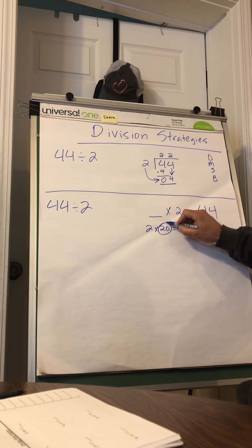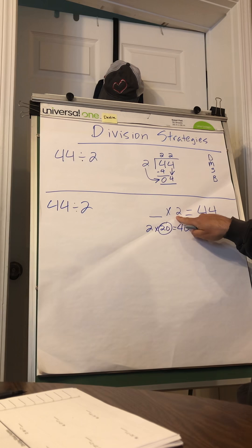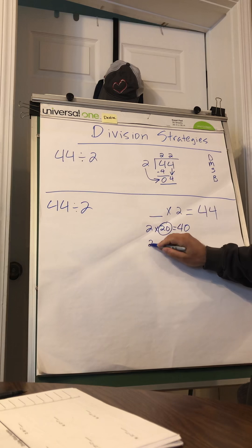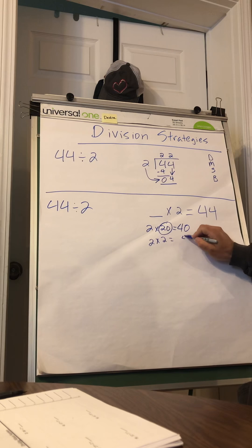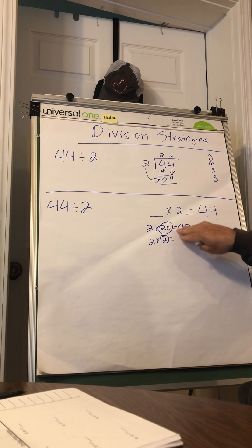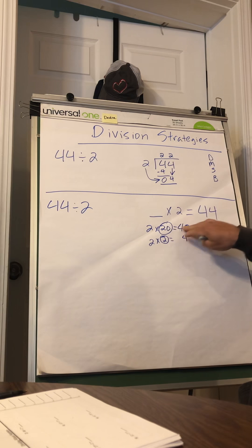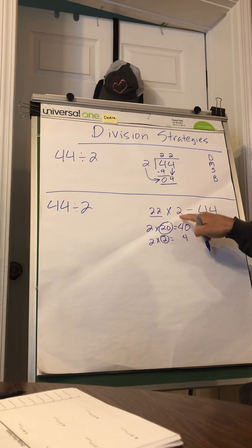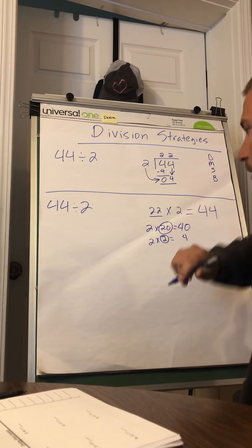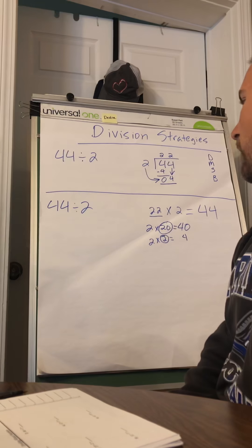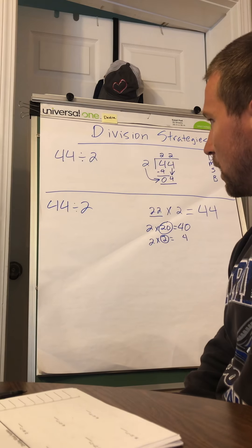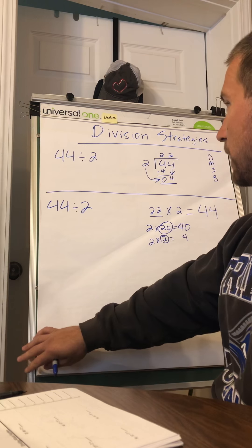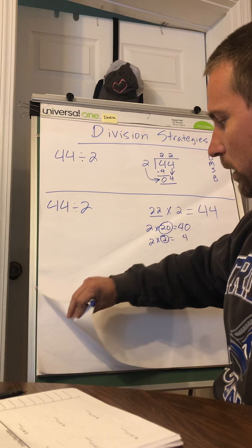The first way we're going to do it is the standard algorithm. So we'll do 44 under the bracket, put our 2 out here. You can help yourself remember the steps of the standard algorithm by writing DMSB - Does McDonald's Sell Burgers - divide, multiply, subtract, bring down. Pretty simple. I'll go through the steps here.